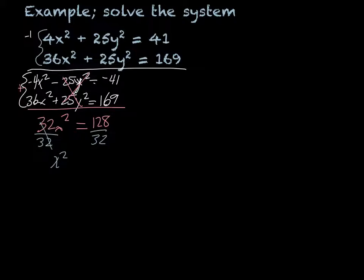Then I can divide by 32. So x² equals 128 divided by 32 is going to be a 4. And then I take a square root. We've got to remember when we take a square root, it becomes plus or minus. So x is equal to 2, or x is equal to negative 2.